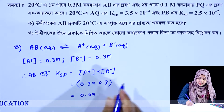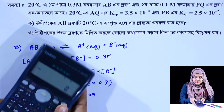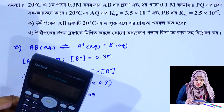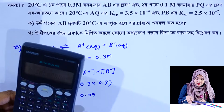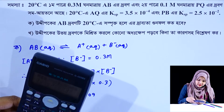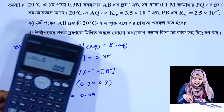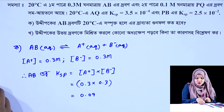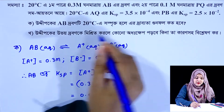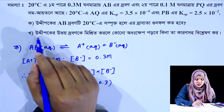Ksp calculate করলে 0.3 × 0.3 = 0.09 পাওয়া যায়। এটা স্বাভাবিক পদ্ধতিতে নির্ণয় করা হলো। এখন 0.09 হলো AB যোগের দ্রাব্যতা গুণফলের মান। এখন আমরা দ্বিতীয় অংশের সমাধান করবো।